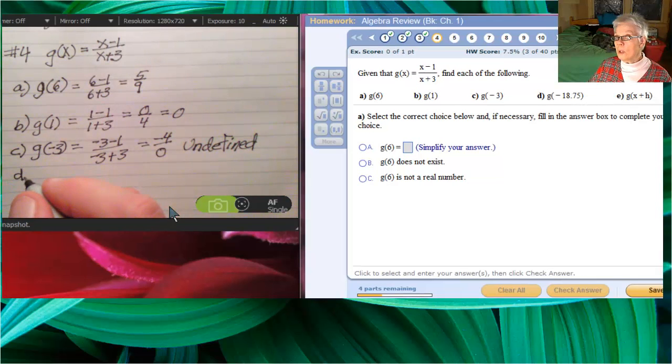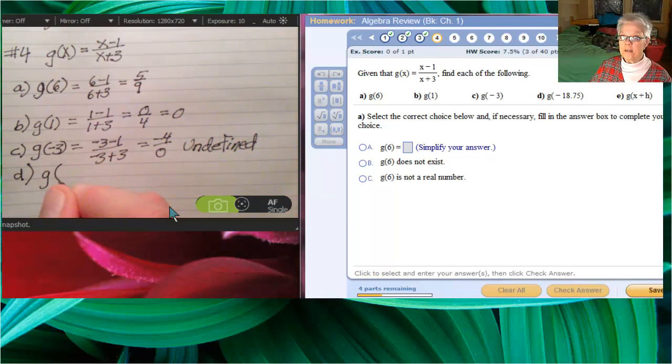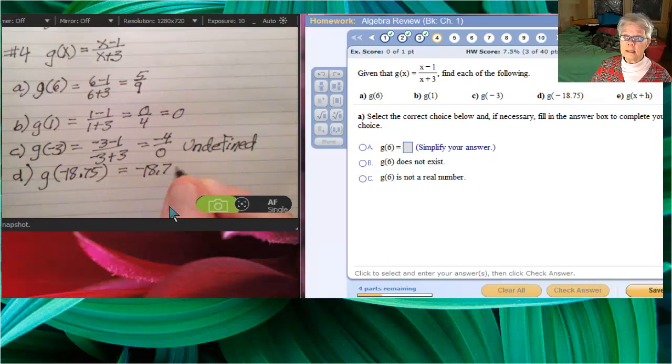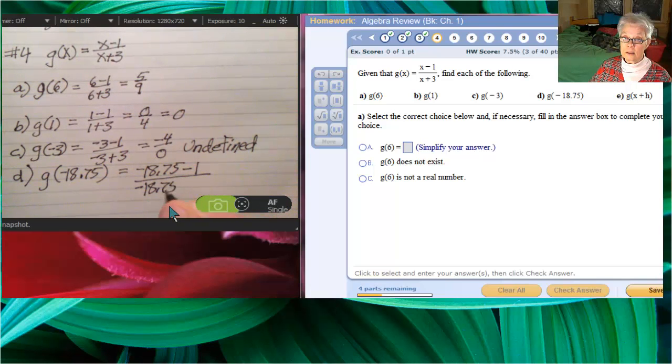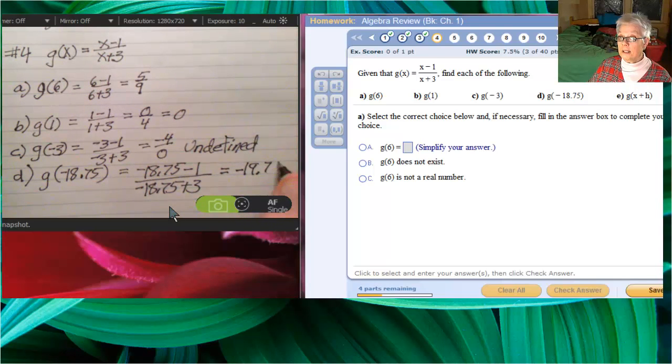Now, let's see. We're going to find d, which is going to be g of negative 18.75. What a number. We're going to plug negative 18.75 in for all the x's. And that will give us negative 19.75 over negative 15.75. After which, I say thank goodness for calculators.